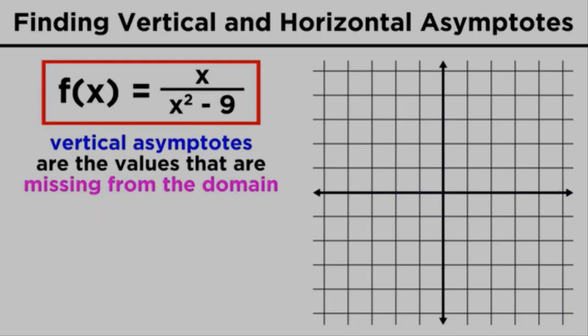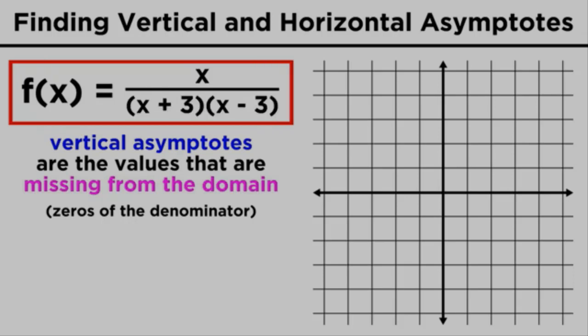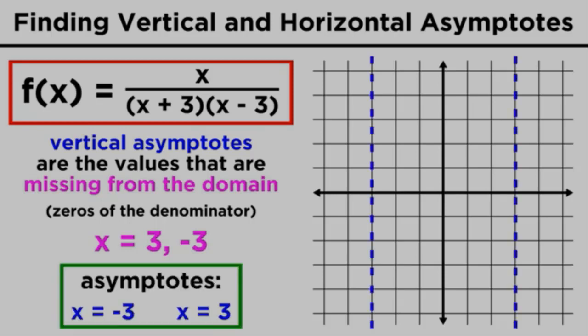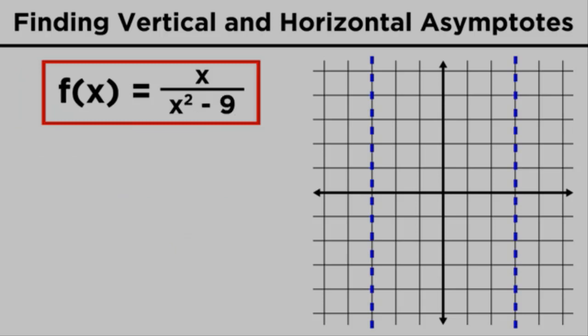Finding vertical asymptotes is pretty simple, as these are values that are not in the domain of the function. That means that these are the zeros of the denominator. Take something like x over x squared minus nine. We know that this denominator can be factored to get x plus three times x minus three, and that means that three and negative three are the two zeros of the denominator. Since those values are not in the domain of the function, we must have vertical asymptotes at x equals negative three and x equals three.